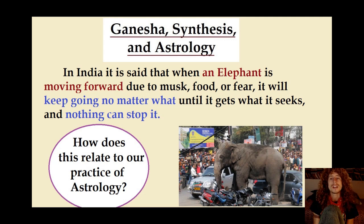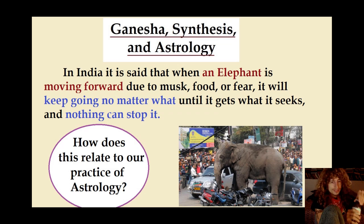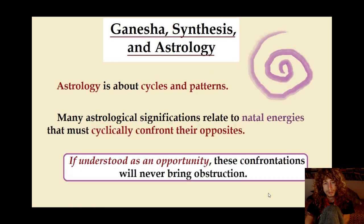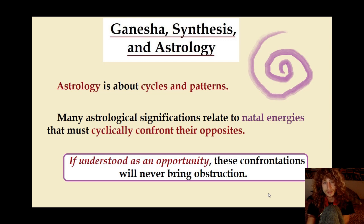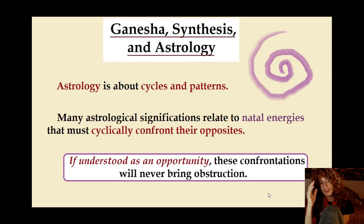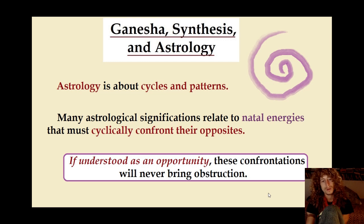In India, it's said that when an elephant is moving forward due to musk, food, or fear, it will keep going no matter what until it gets what it seeks, and nothing can stop it. How does this relate to our practice of astrology? Well, astrology is about cycles and patterns. Many astrological significations relate to natal energies that must cyclically confront their opposites. If it's understood as an opportunity, these confrontations will never truly be an obstruction — they'll just be reality, just be what your lover has brought to you in this moment. If you listen to your lover, if you trust your lover, then anything they bring to you is for a reason and is another way for you to love them.